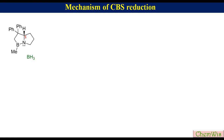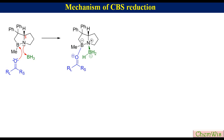Boron, being a Lewis acid, complexes to the nitrogen, while the ketone, being a Lewis base, complexes to the boron to produce this adduct. Complexation activates both partners towards the reaction. Donating electron density to boron is essential to persuade it to transfer hydride ion, and withdrawing electron density from the carbonyl group makes it electrophilic enough to react with a weak hydride source.